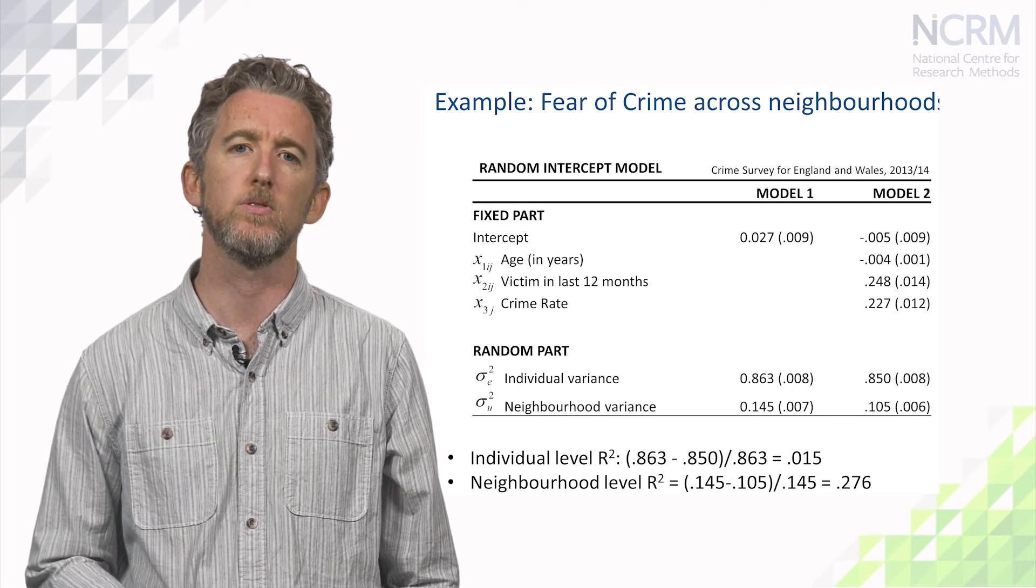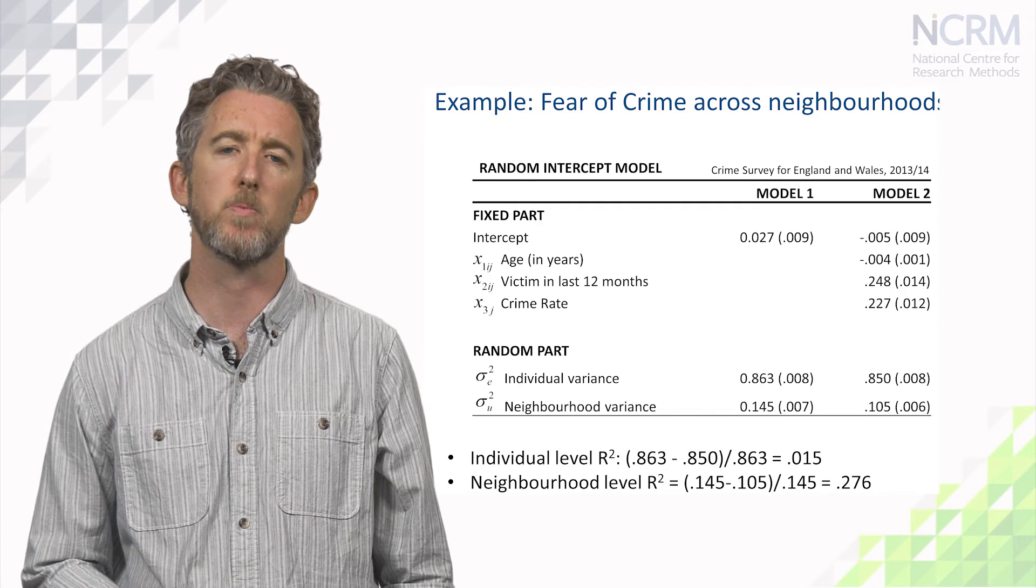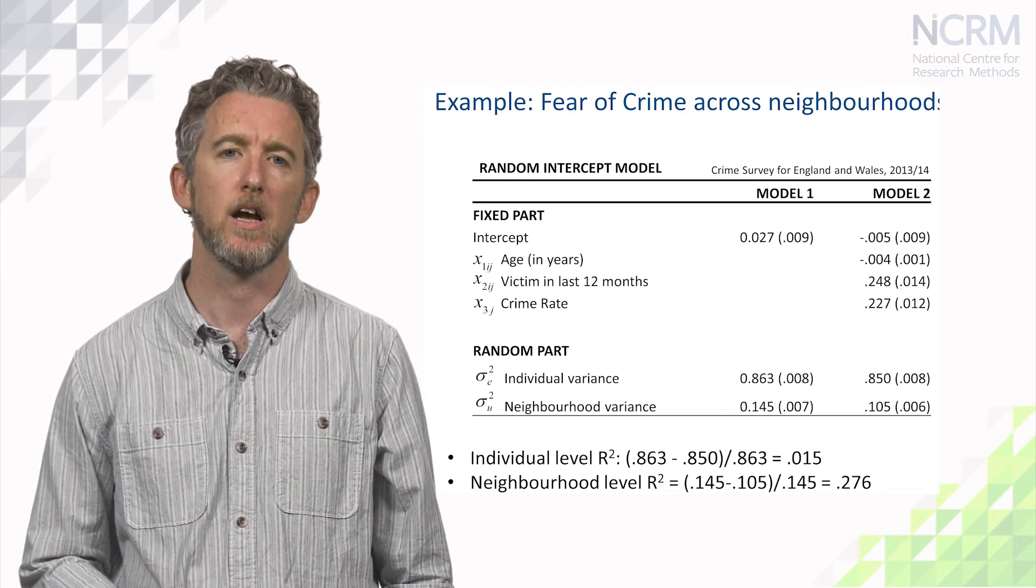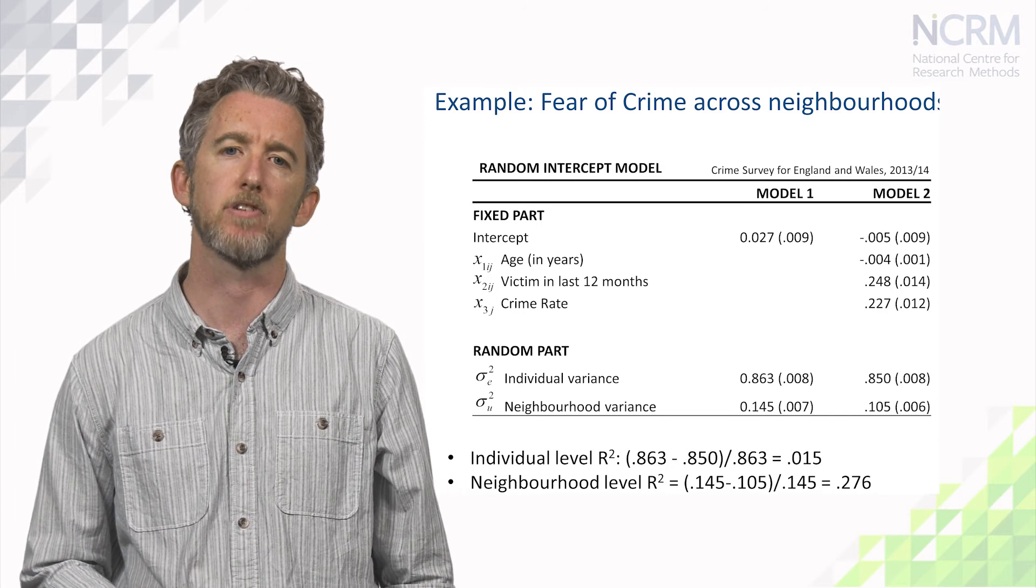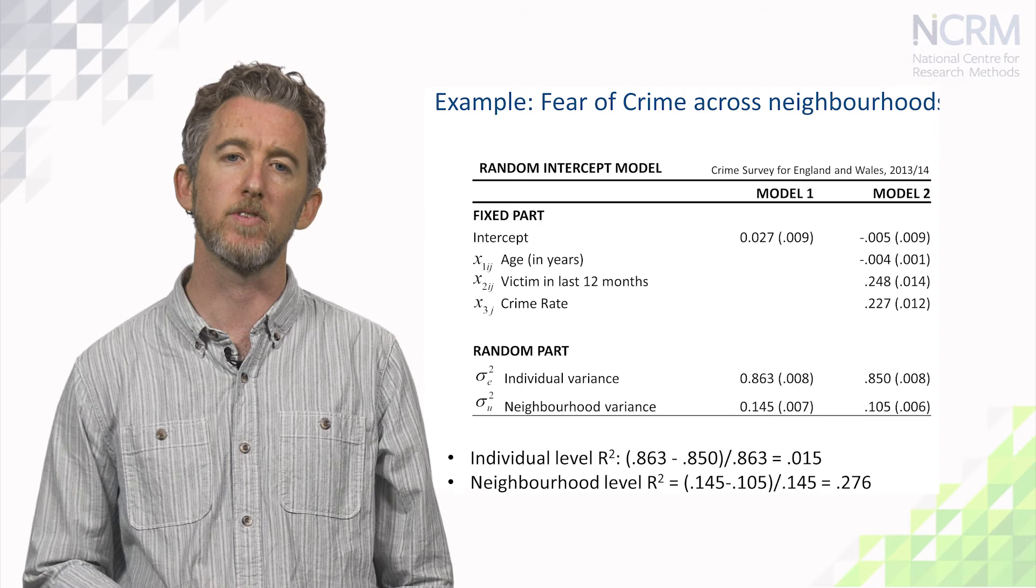So, at the individual level, the variance dropped from 0.863 to 0.85, a drop of roughly 1.5%. And at the group level, accounting for the crime rate leads the area variance to fall from 0.145 to 0.105, a drop of nearly 28%.